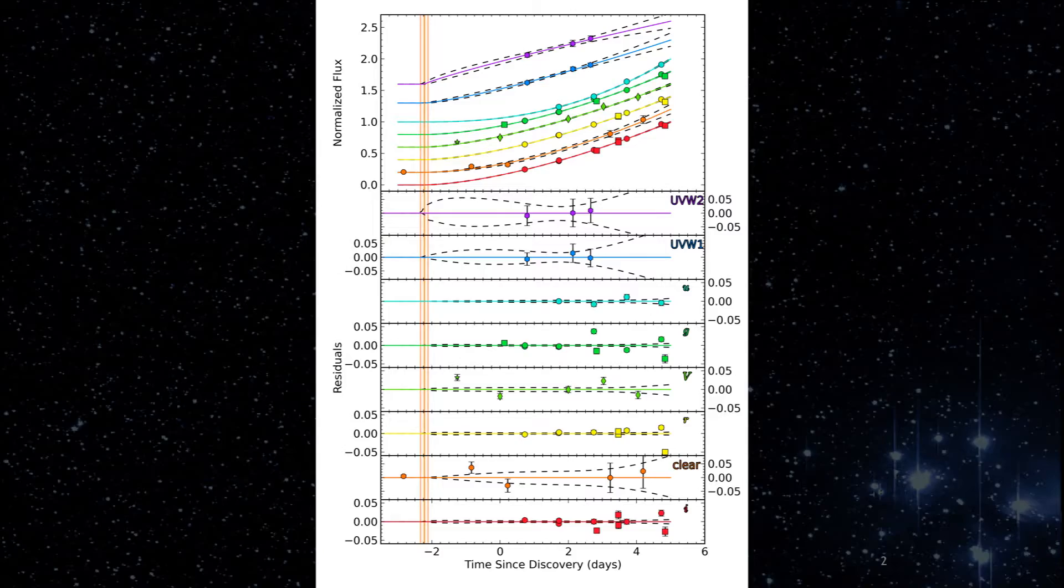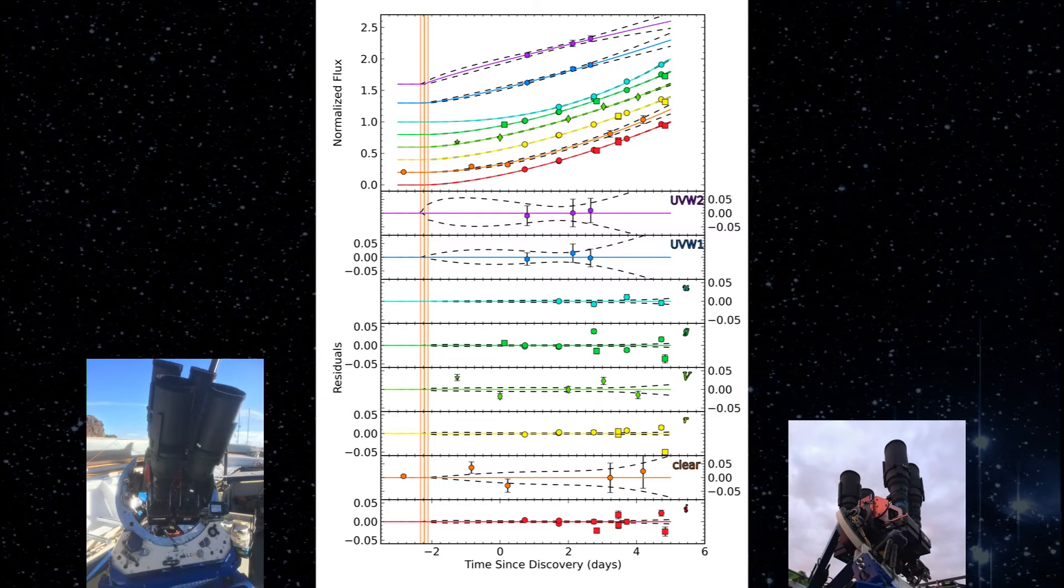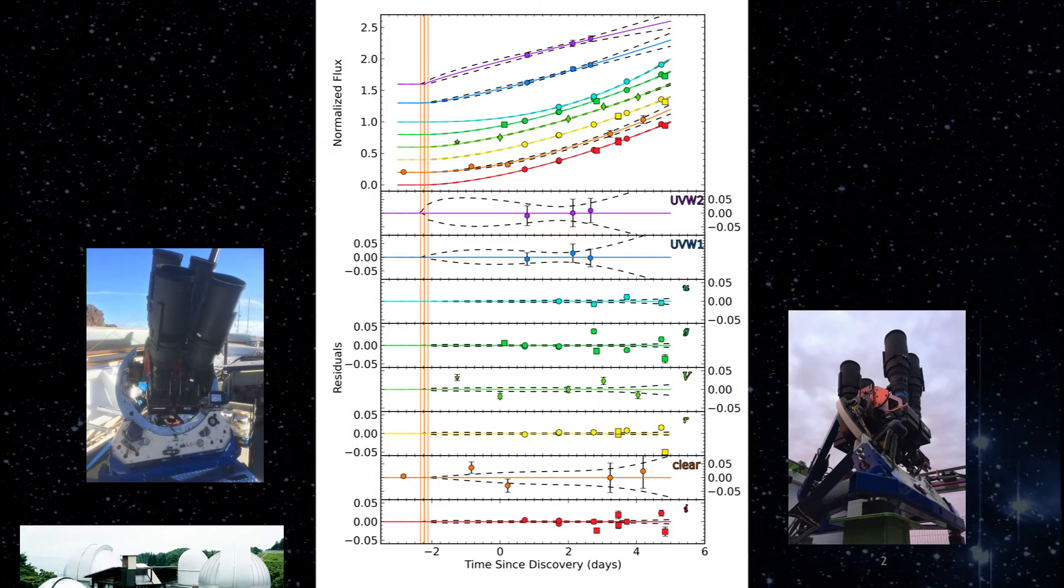However, to place constraints on the interaction between the supernova ejecta and a possible companion, we first need to determine the explosion time. We did this in two ways. First, we fit a power law to the pre-discovery and early-time follow-up photometry of ASSASSIN 14LP to determine where these fits have zero flux. The pre-discovery data came from both the northern and the southern ASSASSIN units, as well as the Japanese amateur supernova hunter Koichi Itagaki.